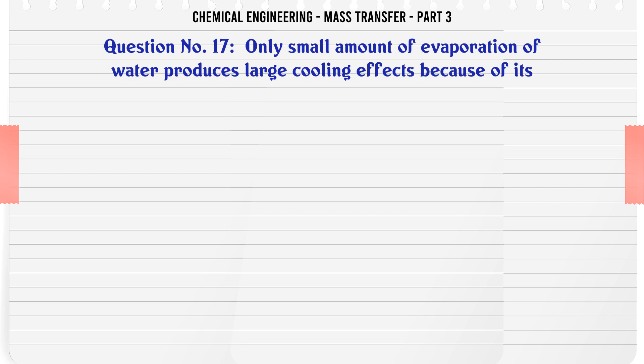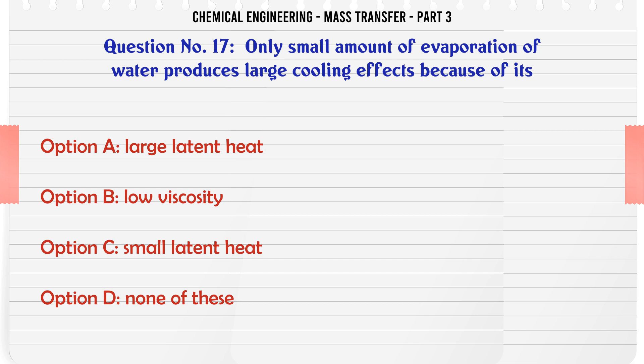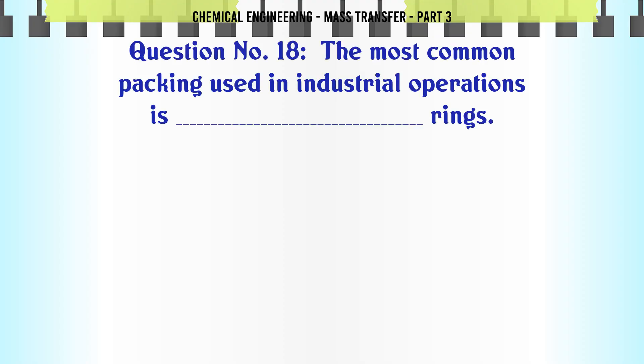Only small amounts of evaporation of water produce large cooling effects because of its: A) large latent heat, B) low viscosity, C) small latent heat, D) none of these. The correct answer is: large latent heat. The most common packing used in industrial operations is Raschig rings.